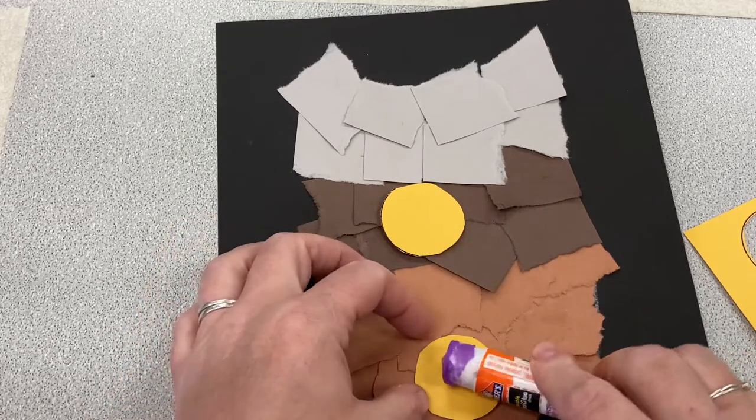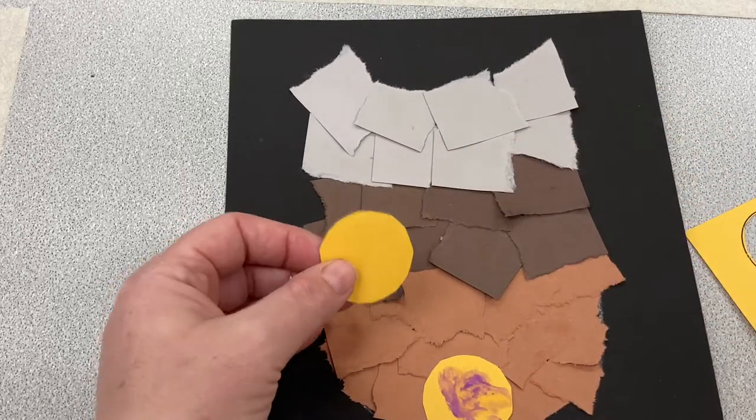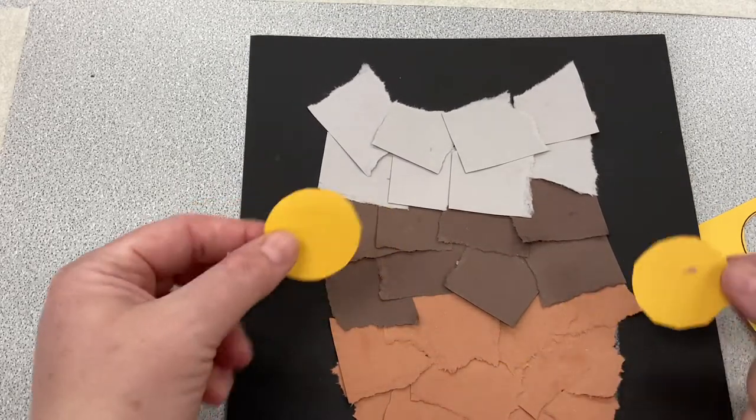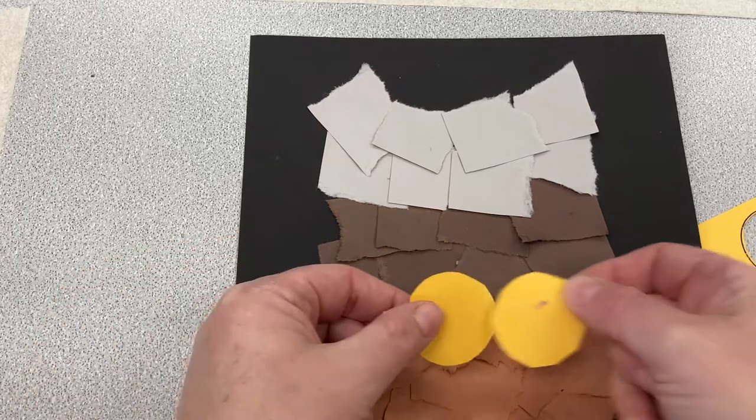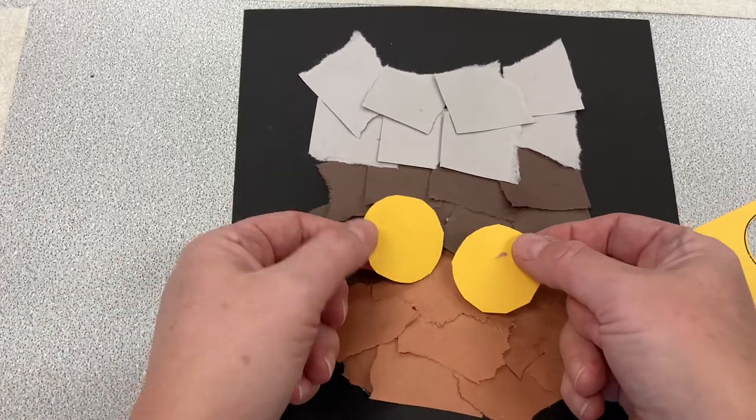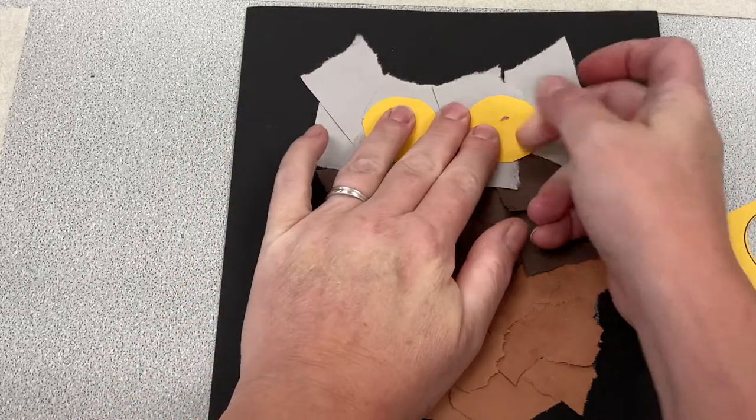Now, let's glue. I think I'll put my eyes right here. How's that look? No? Okay. How about here? No, not there either. How about up here? Yeah, I'll put my owl eyes right up here.